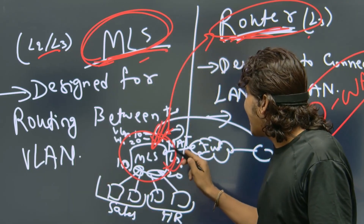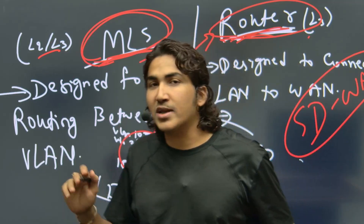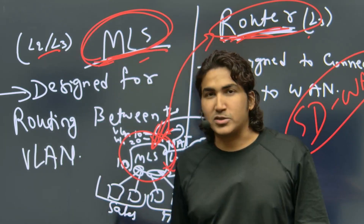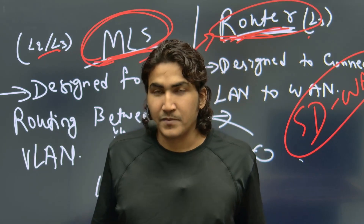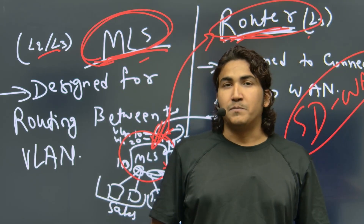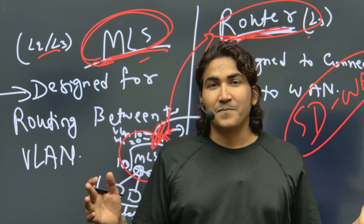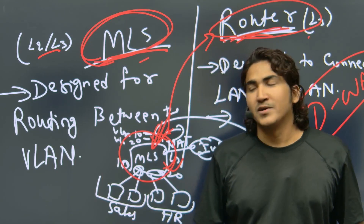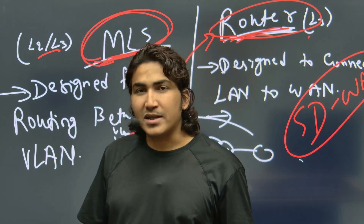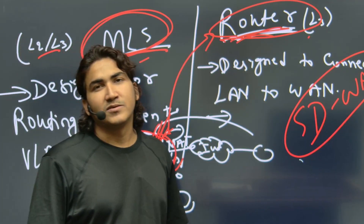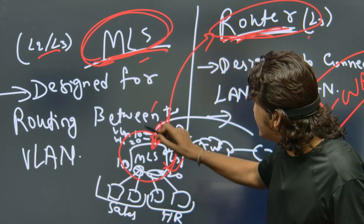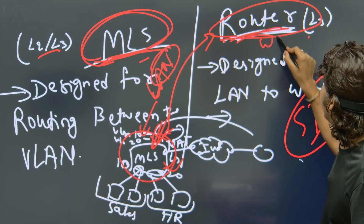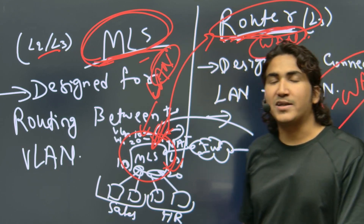MLS cannot replace the router. Router is designed for a different purpose and MLS is designed for a different purpose. MLS is only responsible for inter-VLAN routing, or internal routing. We will not use MLS to connect two different organizations or ISP to customer — we always use router for that. MLS is a LAN device; router is a WAN device.